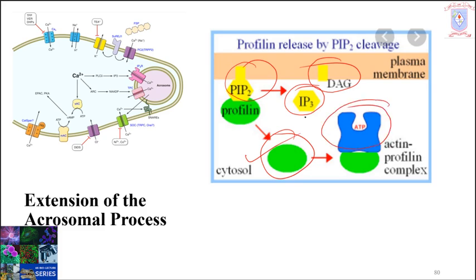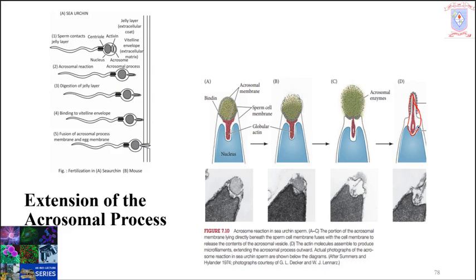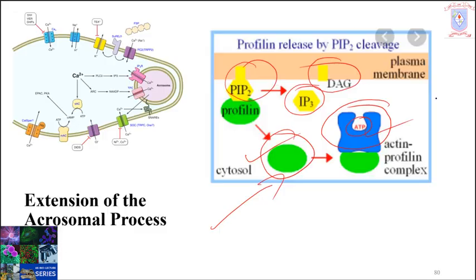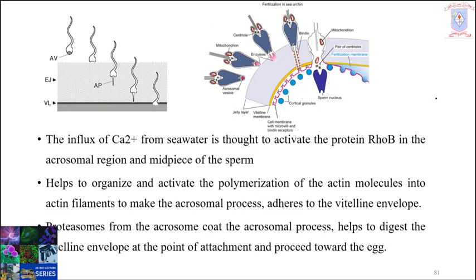Free profilin promotes ADP-ATP exchange on G-actin. This ADP-ATP exchange is a crucial mechanism during polymerization of actin filaments and is facilitated by profilin. The increase in G-actin-ATP promotes actin polymerization adjacent to the plasma membrane. As a result, actin polymerizes towards the outside of the cell and forms the acrosomal process — this process is called acrosomal filament formation.